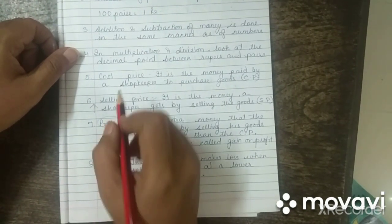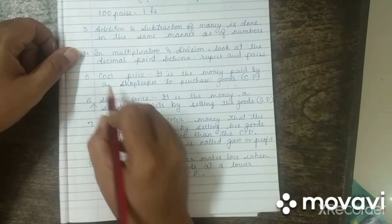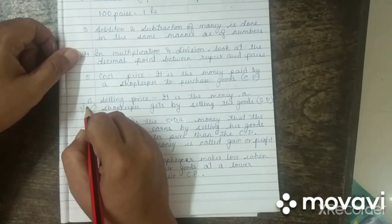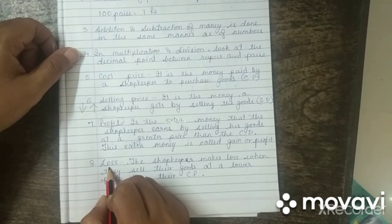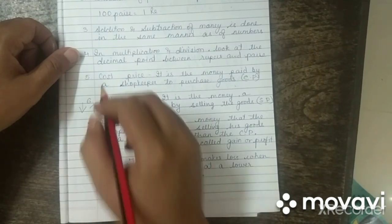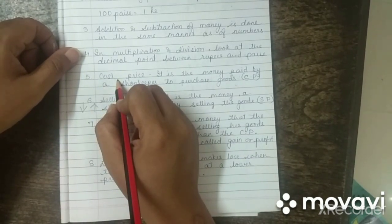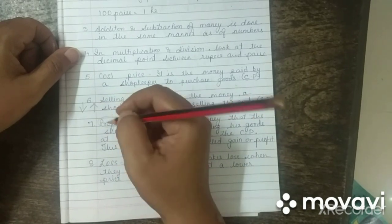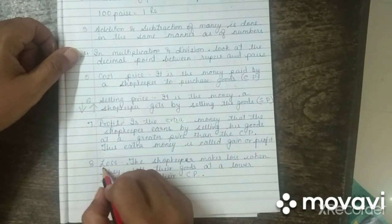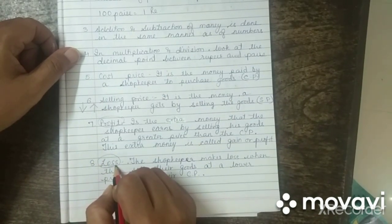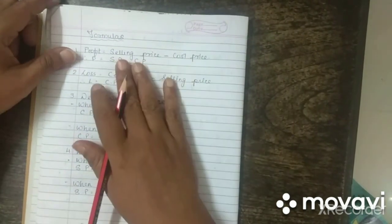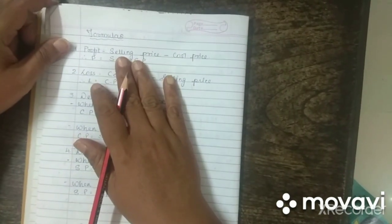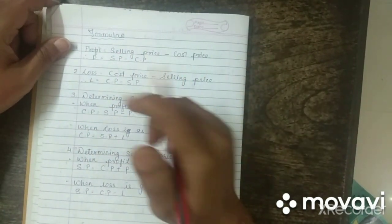But when the selling price is less than the cost price, then you get a loss. The money you paid to buy the goods is more than what you received back, and that difference becomes your loss. Here are the formulas which you can apply to find the various prices.